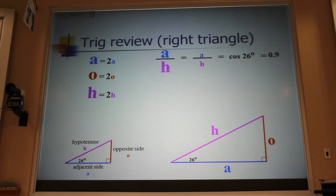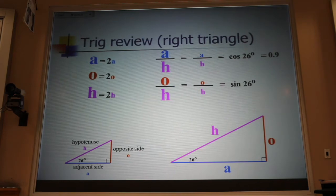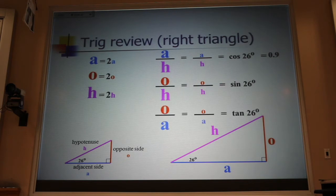Now, we can also define or name this ratio, the opposite over the hypotenuse, we call the sine of 26 degrees. And the last one we will use is the opposite over the adjacent, which is the tangent. Those are the only functions we're going to need as far as trig is concerned.